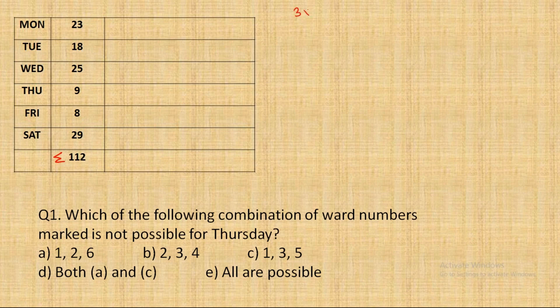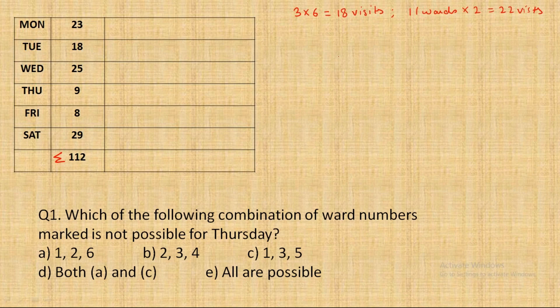A small calculation tells me: three wards every day over six days makes 18 visits. However, there are 11 wards. If all 11 wards were visited twice, that would make 22 visits. But there are only 18 visits — that means four visits were not made. This is also mentioned in the question: two wards were never visited. Since each ward was to be visited twice, two unvisited wards account for four missed visits.